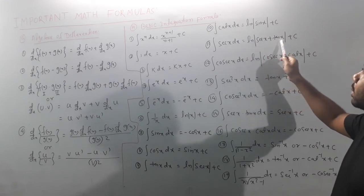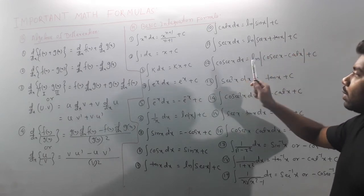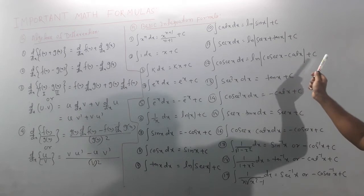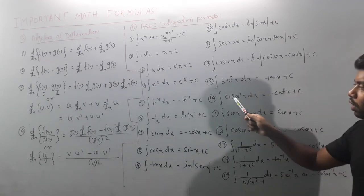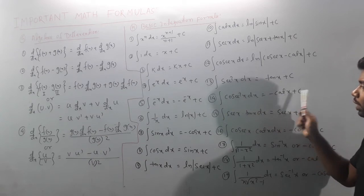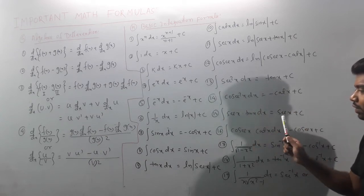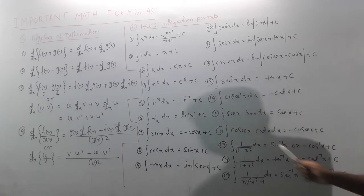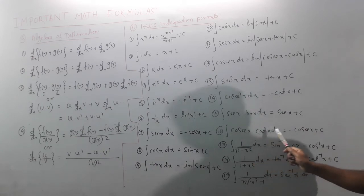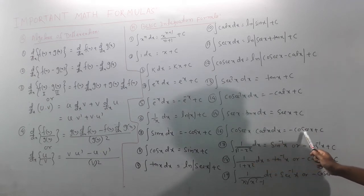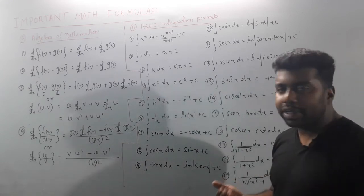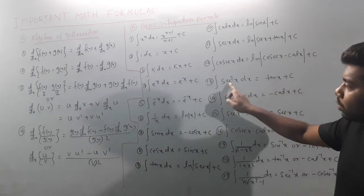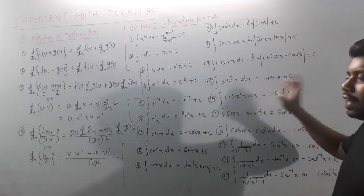∫sec(x) dx = ln|sec(x) + tan(x)| + c. ∫cosec(x) dx = ln|cosec(x) - cot(x)| + c. ∫sec²(x) dx = tan(x) + c. ∫cosec²(x) dx = -cot(x) + c. ∫sec(x)·tan(x) dx = sec(x) + c. ∫cosec(x)·cot(x) dx = -cosec(x) + c. Note: derivative of tan(x) is sec²(x), so integration of sec²(x) is tan(x). Derivative of cot(x) is -cosec²(x).